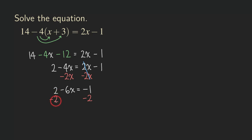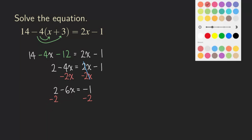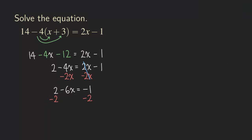I need to subtract 2 so that it will get canceled, just like the previous step. So now I cancel them. And then on the left-hand side of the equation, we are left with just the negative 6x.